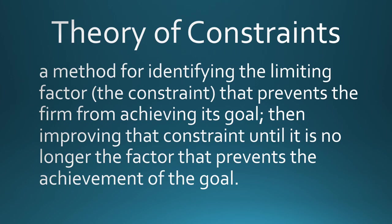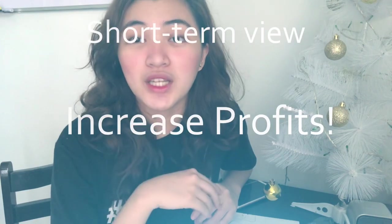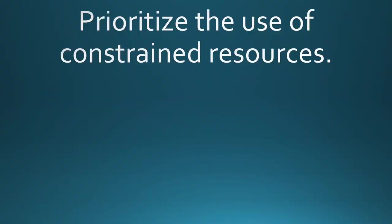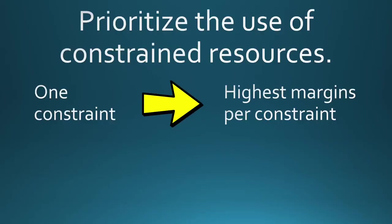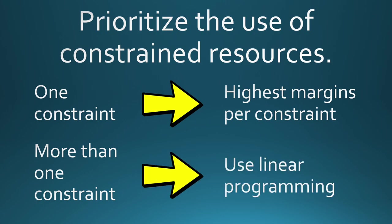In the short term view, always remember that the goal is to increase profits. Thus, if we are faced with constraints such as lack of resources, we should prioritize its use in such a way that we will maximize profits. Prioritize the use of constrained resources. If there is one constraint, we will prioritize the one with the highest margin per constraint. And if there is more than one constraint, we will use linear programming.